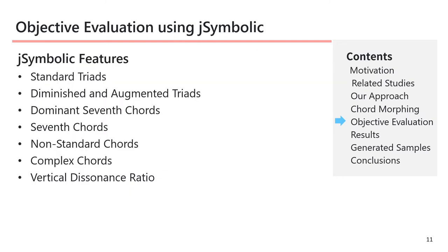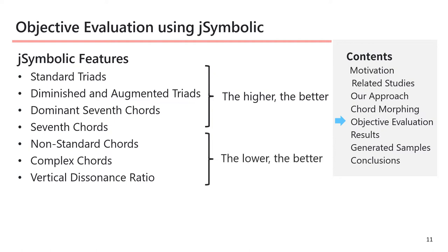We extracted chord features using jSymbolic. In the proposed model, we expected higher values for standard triads, diminished and augmented triads, dominant seventh chords, and seventh chords. In contrast, non-standard chords, complex chords, and vertical dissonance ratios should have lower values.